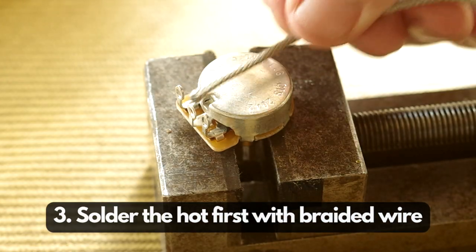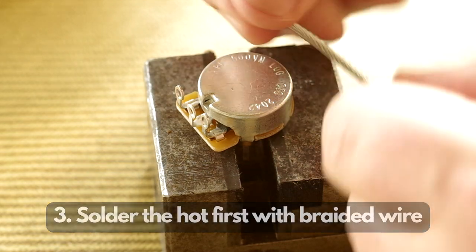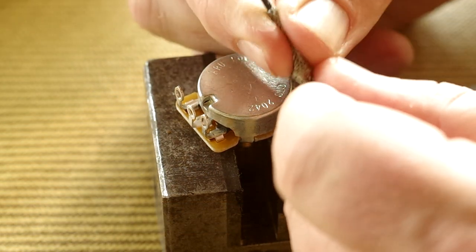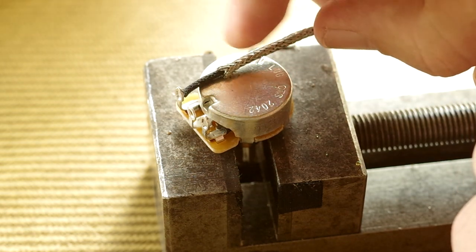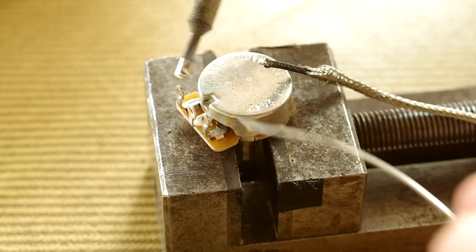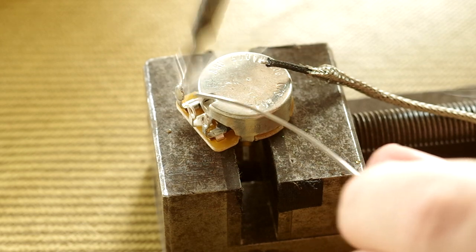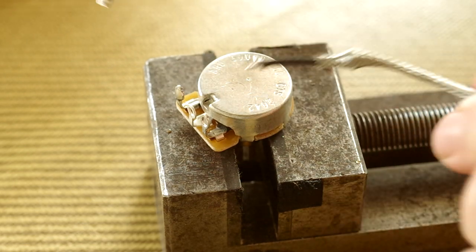Tip number three is to solder the hot first when it comes to braided wire. This is what we call traditional braided wire and is most likely to be seen on Gibson style pickups. It has a hot inner core and then the ground is the actual braided thing that you see.